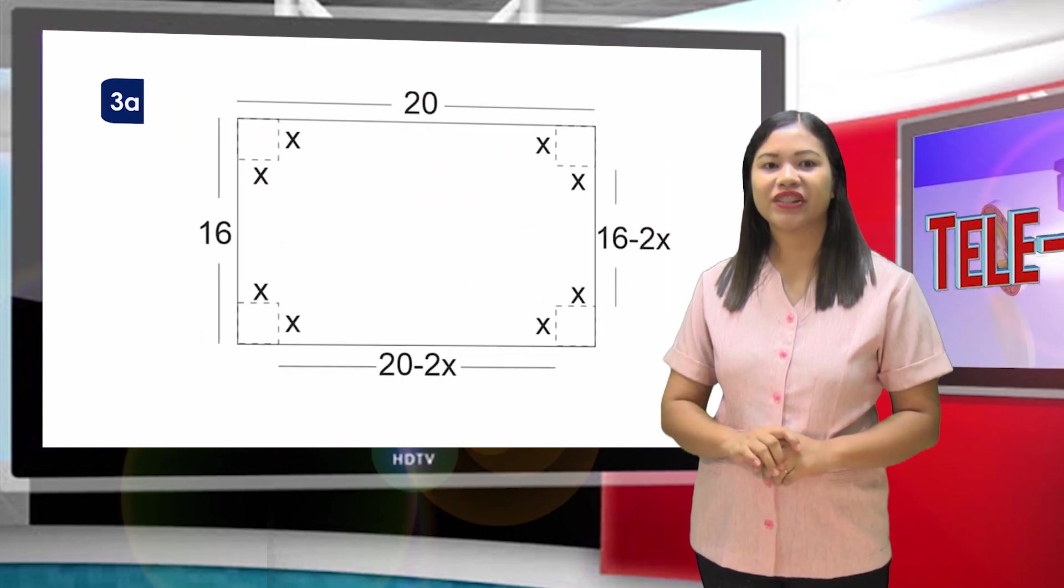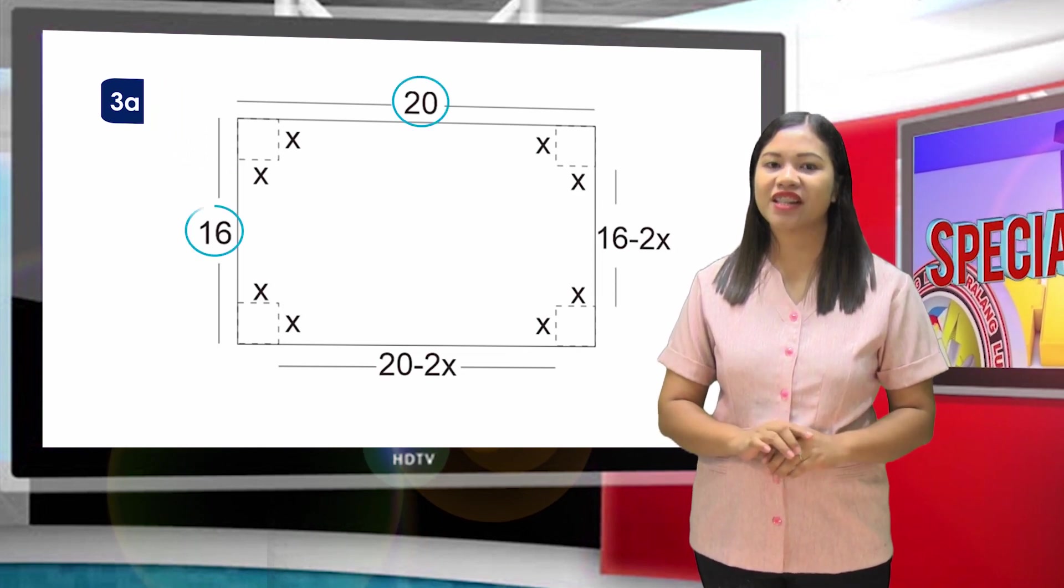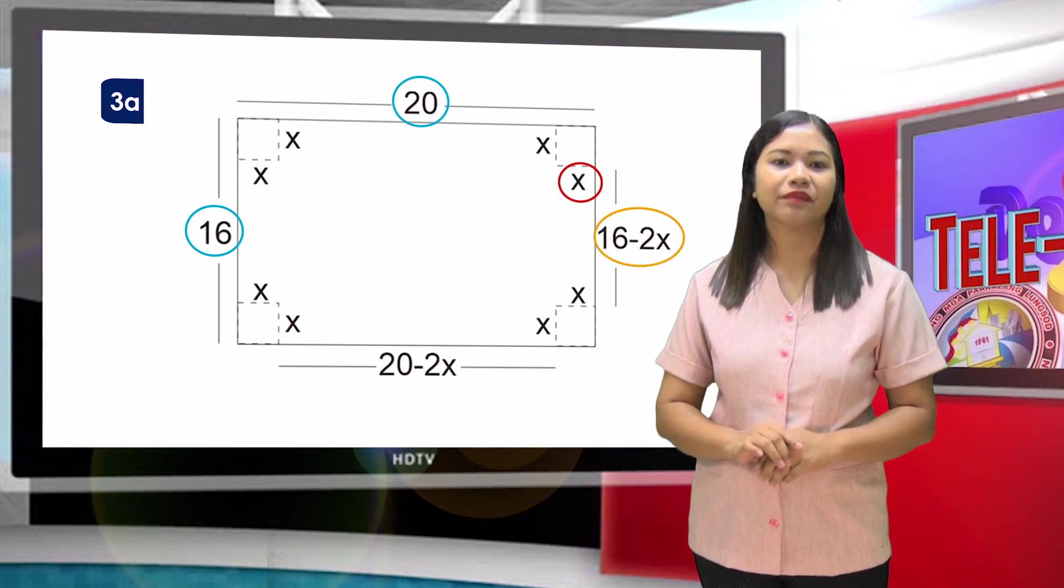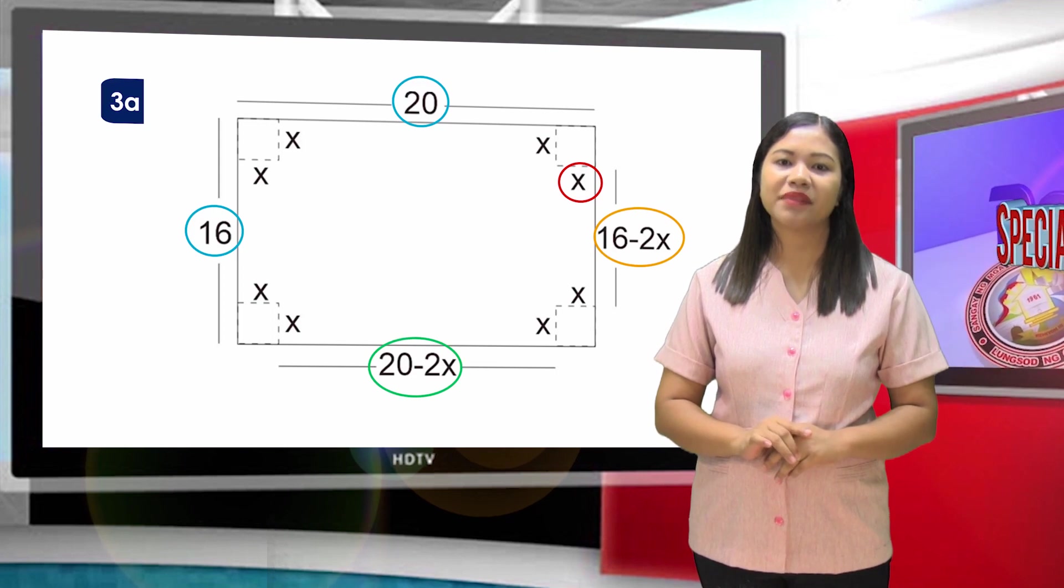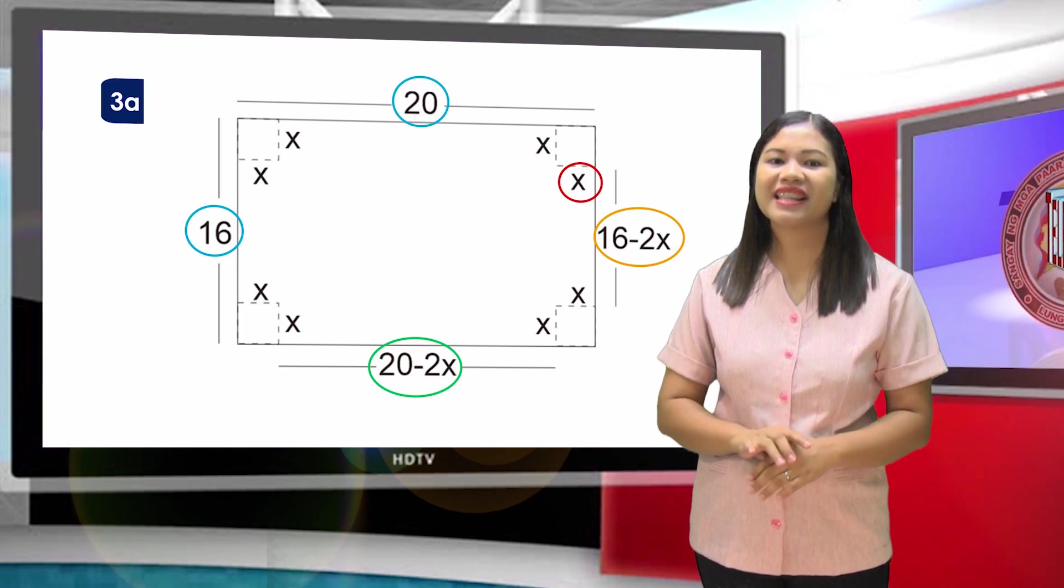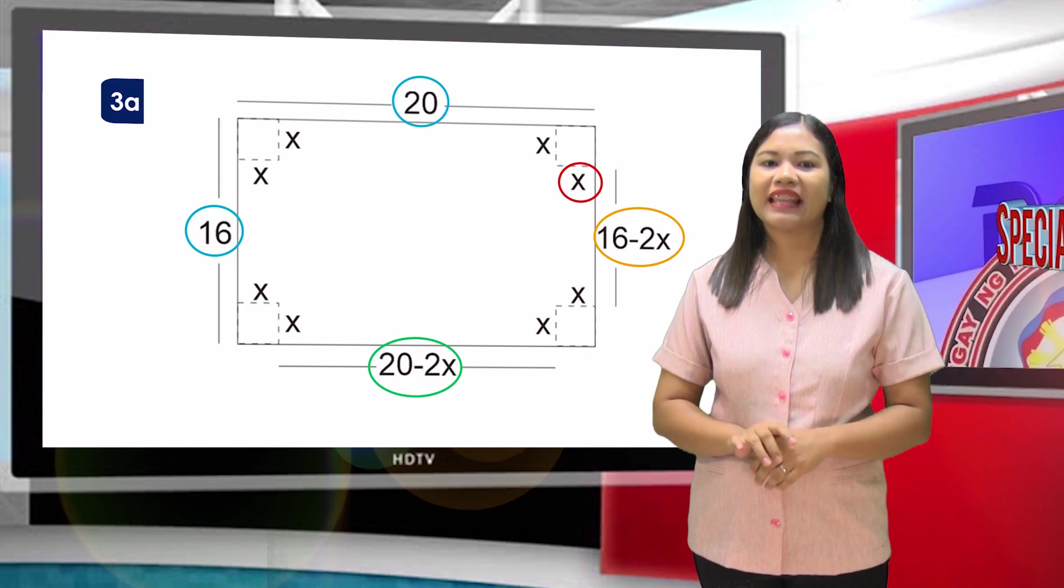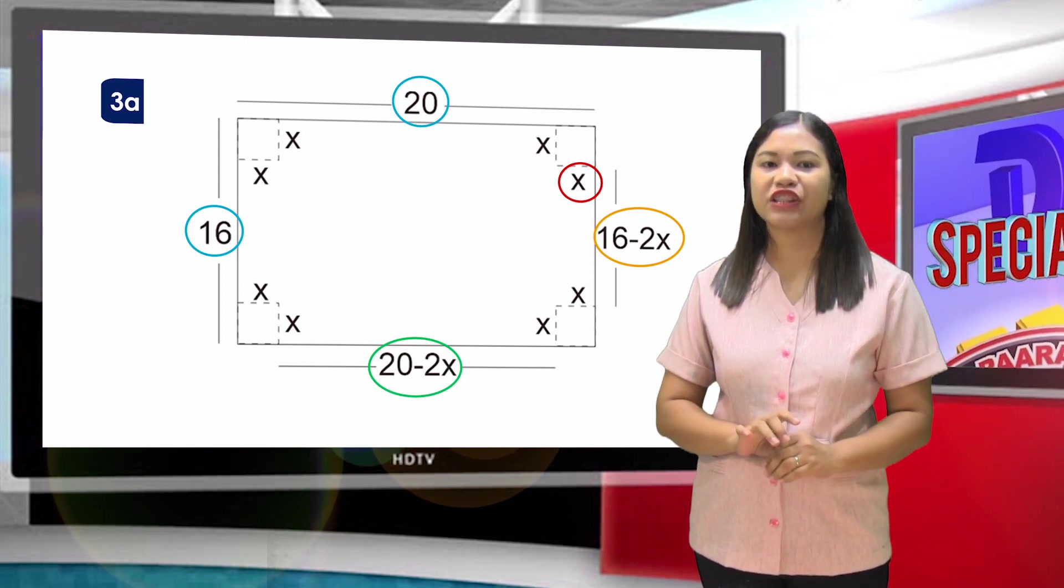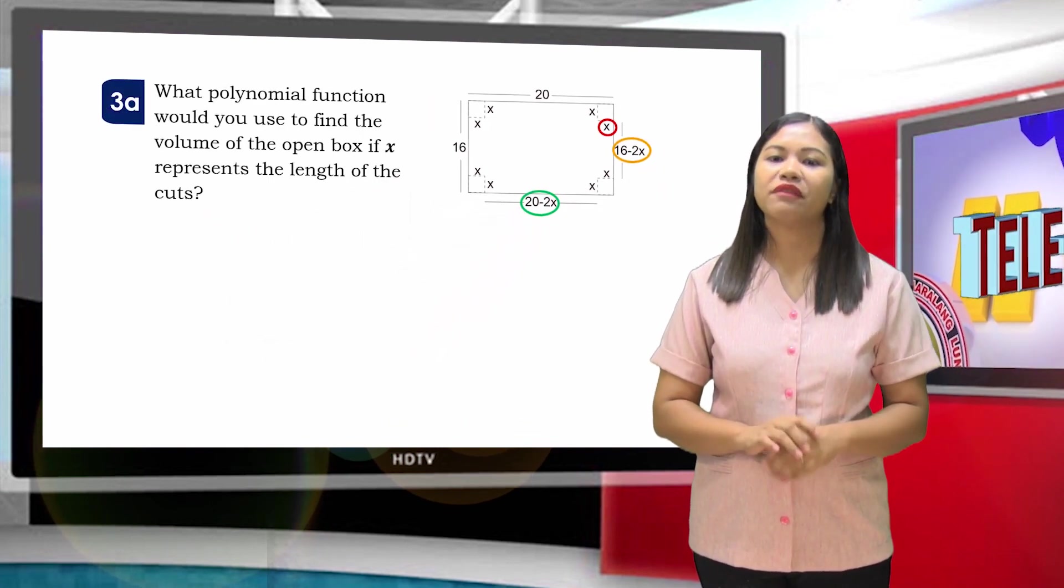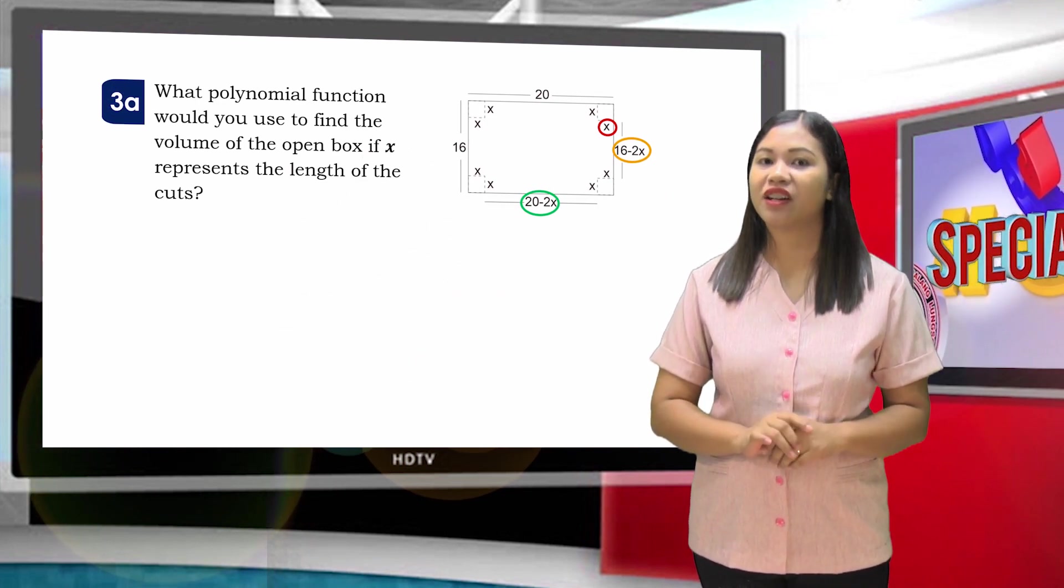Let us analyze the situation. We have a rectangular piece of paper whose dimensions are 20 inches by 16 inches. Then we will cut out the four corners of the rectangle so that you may fold up the sides to create an open box. This gives us the height of the open box, which is X inch. The length will be 20 - 2X inch, and its width will be 16 - 2X inch.